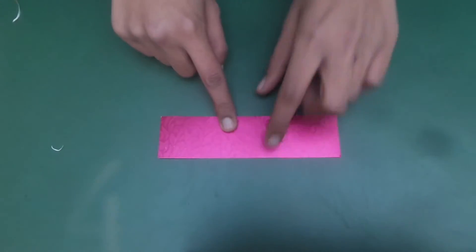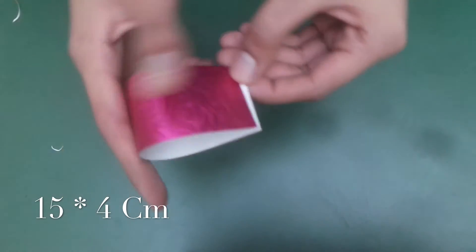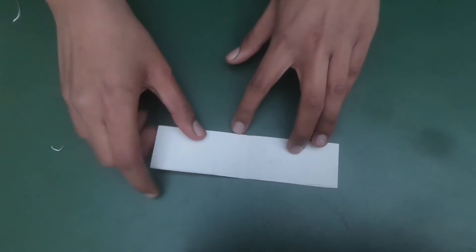Now it's time to get started with our second step, for which I'm going to take design sheet of 15 centimeters of length and 4 centimeters of width. And now I'm going to fold it into half so that I can get a middle crease.